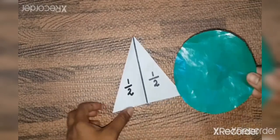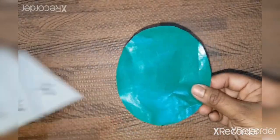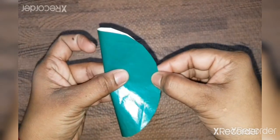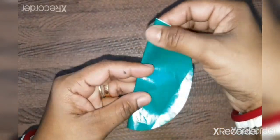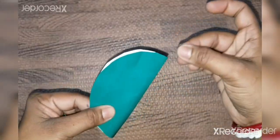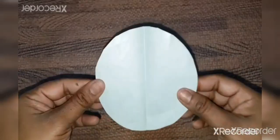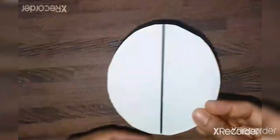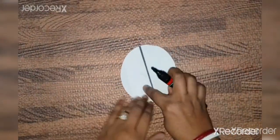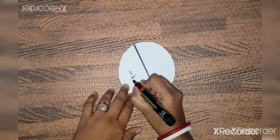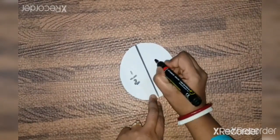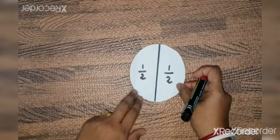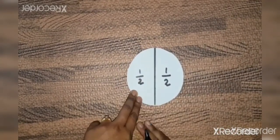Same way, let us now fold the circle. When I fold the circle, it should be exactly on each other so that we get two equal halves. This part is one upon two, and this side also it is one upon two. Each part, because I have divided the circle into two equal parts, so each part is one upon two.